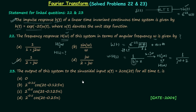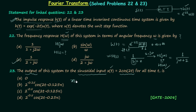Now we move to the second question, which is similar to what we solved in the last lecture. It asks us to find the output when a sinusoidal input x(t) = 2cos(2t) is applied. We know H(ω) as the frequency response. From the last lecture, for a general sinusoidal input a₀ sin(ω₀t + φ) applied to an LTI system with frequency response H(ω), the output y(t) will be similar to the input with two changes.